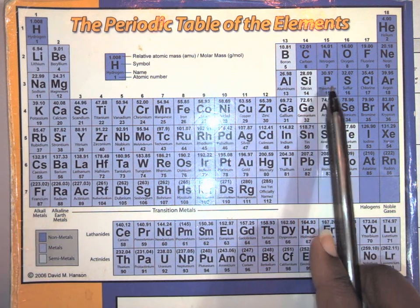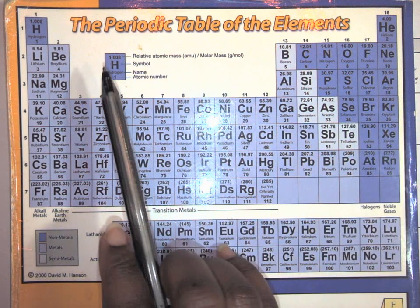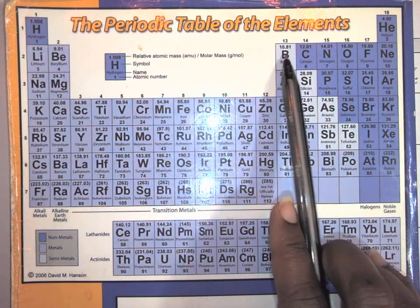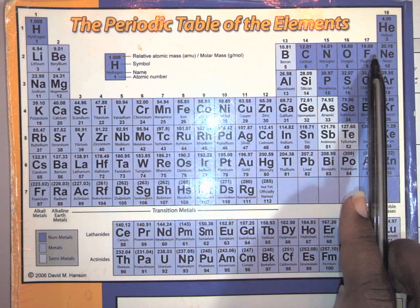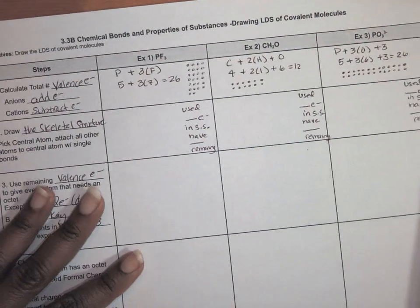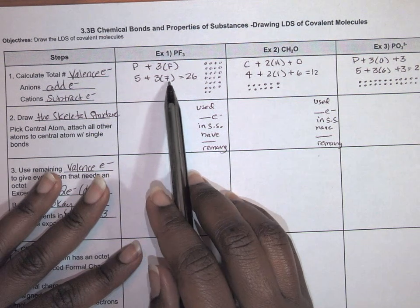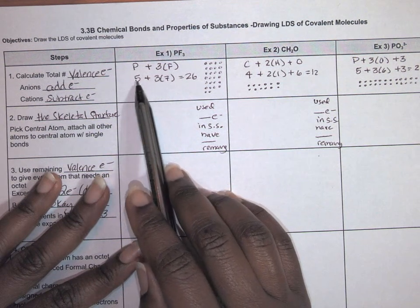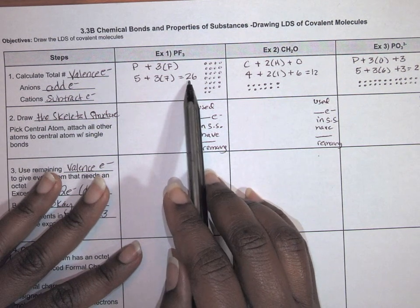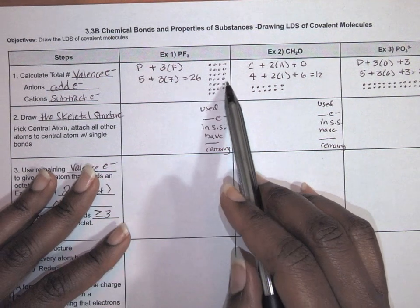Fluorine is in group 17, so it has seven valence electrons. There's only one phosphorus with five electrons, and three fluorines each with seven. So five plus three times seven gives us 26 total valence electrons. I drew those as dots.